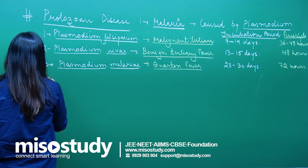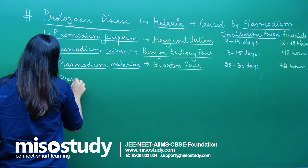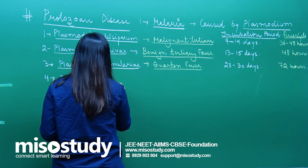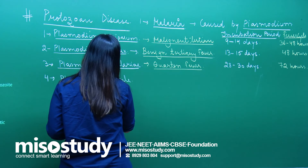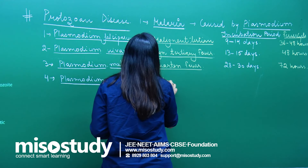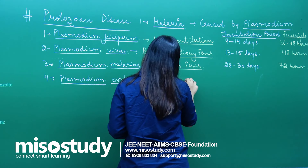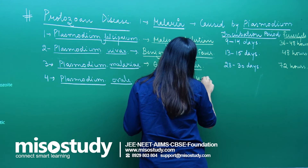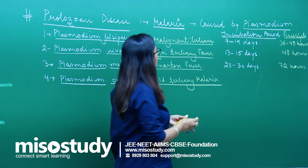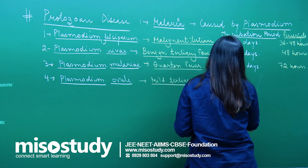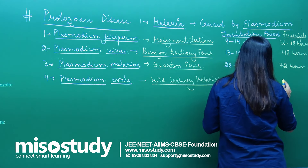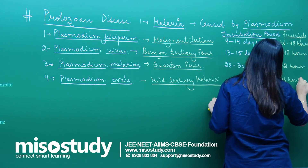Let us talk about the fourth and last one, plasmodium ovale. Plasmodium ovale causes mild tertiary malaria. In this case the incubation period is around 14 days, and the fever cycle is again 48 hours.